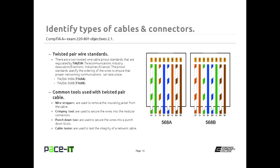Let's talk about twisted pair wiring standards. There are two different twisted wire pinout standards associated with the TIA-EIA — the Telecommunication Industry Association Electronic Industries Alliance — and those pinouts specify the ordering of wires in the RJ45. The T568A standard calls for pin 1 to be white-green, then green, white-orange, blue, white-blue, orange, white-brown, brown.